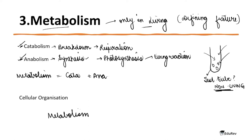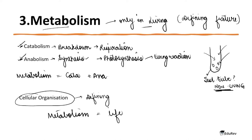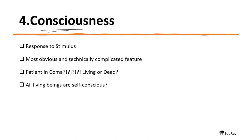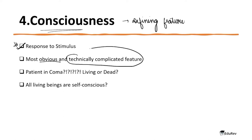To see proper metabolic interactions we need to see the cellular organization — that is the defining property of the living. The next feature is consciousness, which is also a defining feature of living. Consciousness is basically the response to a stimulus. It is the most obvious yet technically complicated feature of living beings. Any organism that is alive will respond to its environment — for example, a pet dog feeling hot will go into an AC room, and when cold will go to sunlight.